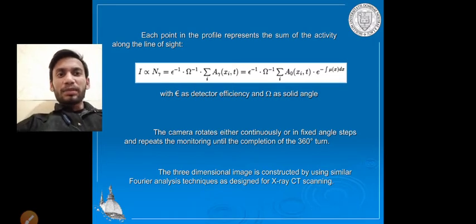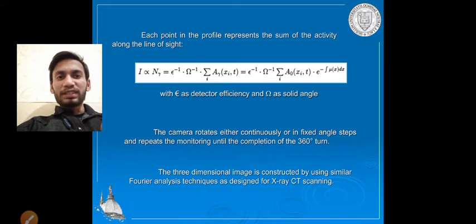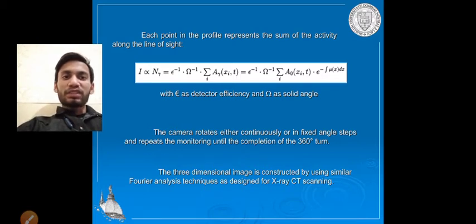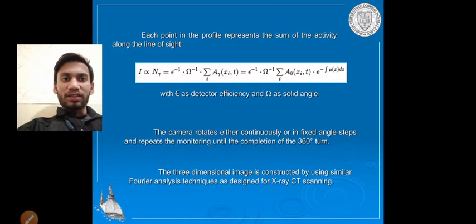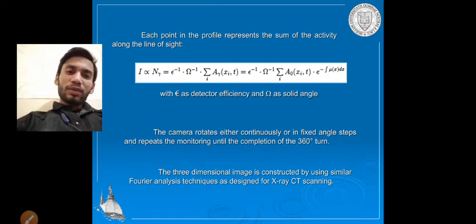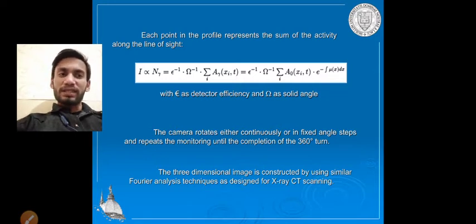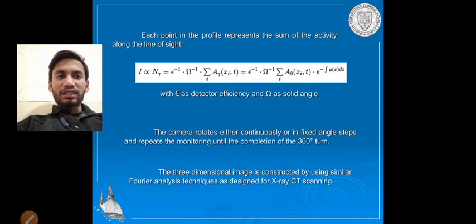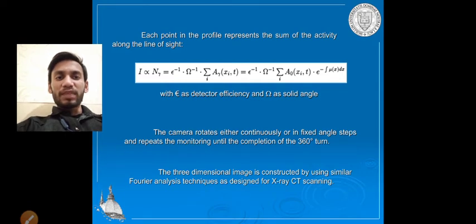Each point in the profile represents the sum of activity along the line. The detector efficiency and solid angle (omega) are represented here. The camera rotates either continuously or in fixed angle steps — for example, moving 10 degrees in 10 seconds — repeating until completion of a 360-degree turn. The three-dimensional image is constructed using a Fourier analysis technique similar to X-ray CT scanning.